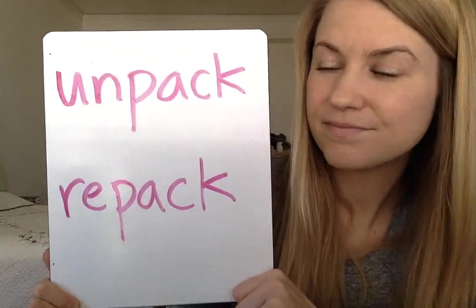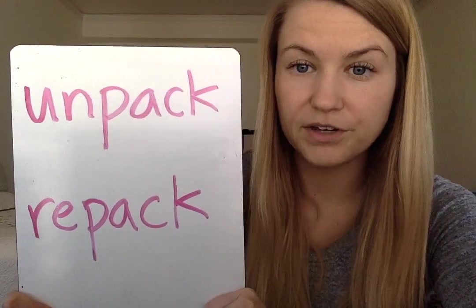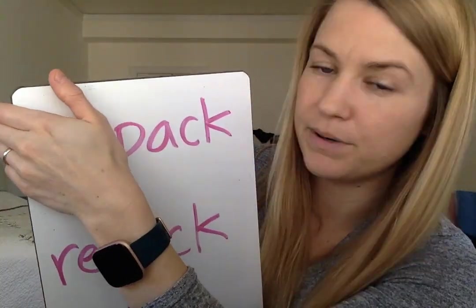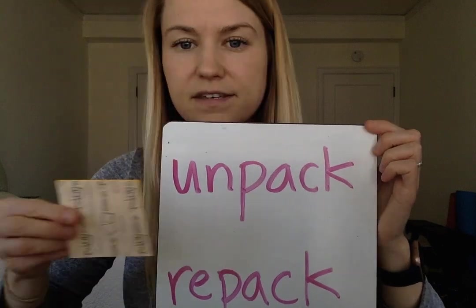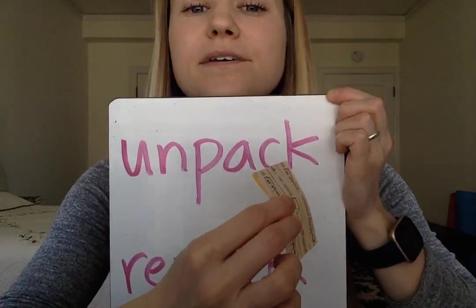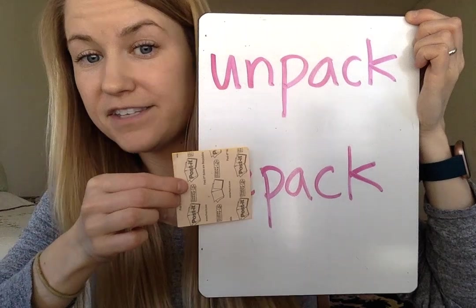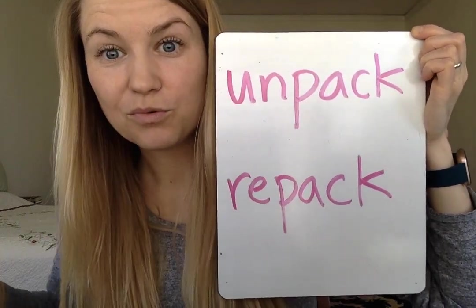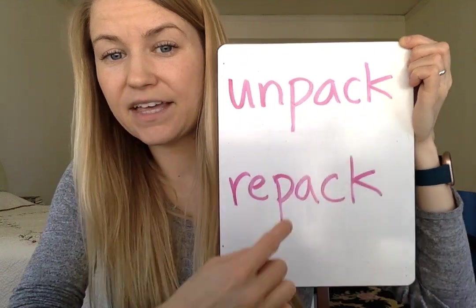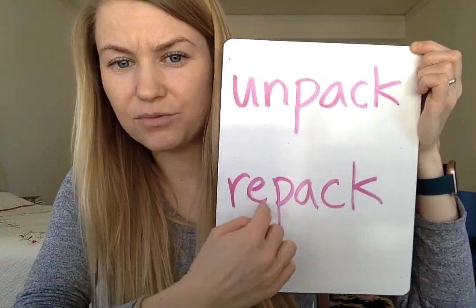Let me show you. If I showed you these two words here, you could first figure them out by covering up what we refer to as the prefix — that beginning part. In this case, we have the base word 'pack,' but we put the word 'un' in front of it. And down here, same thing — we have the word 'pack,' but instead of 'un,' we put 're.' So we have 'unpack' and 'repack.'